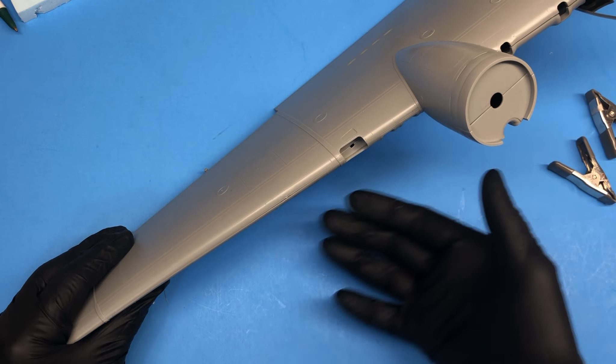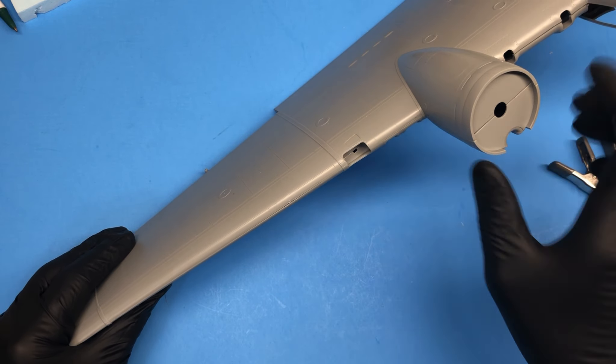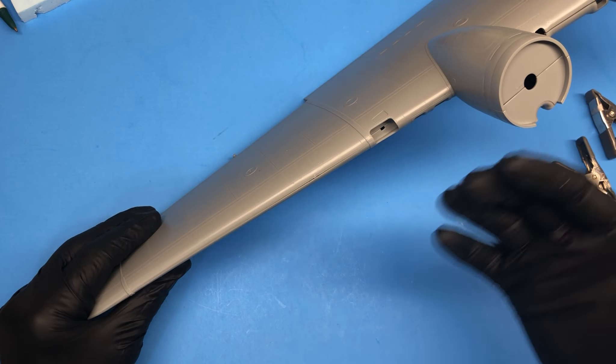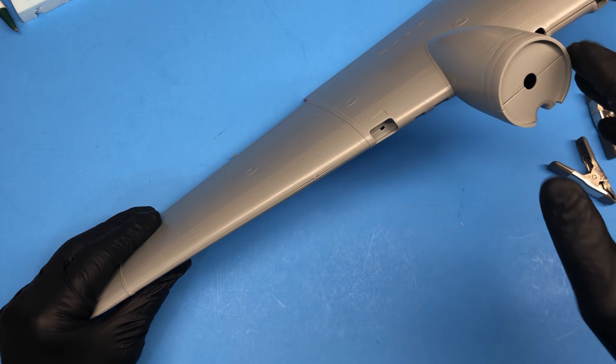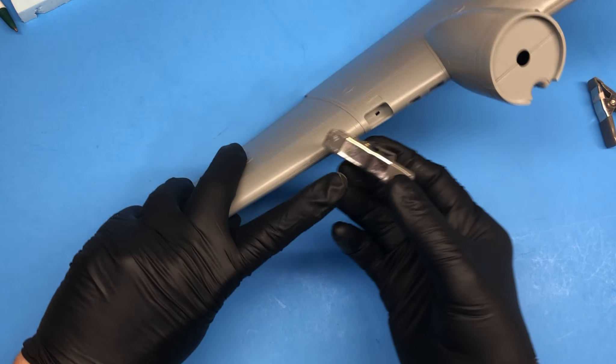...sometimes you have to glue two halves together, either the fuselage or the wings, and tape doesn't necessarily do the trick all the time. So again, same thing because it doesn't really damage the part...